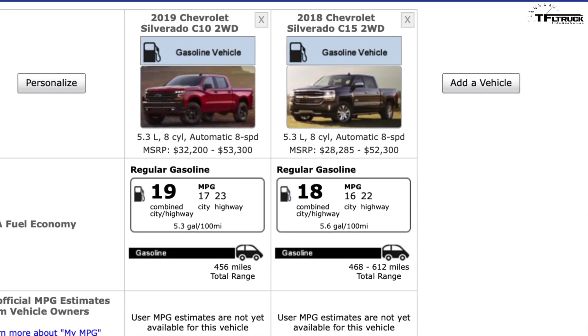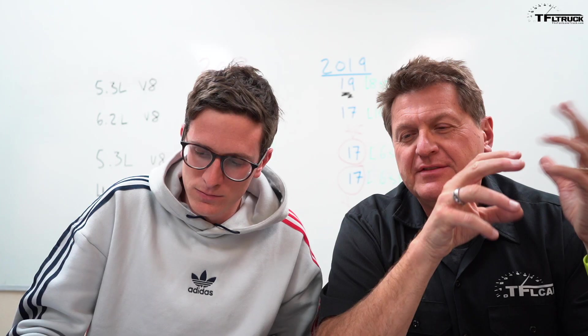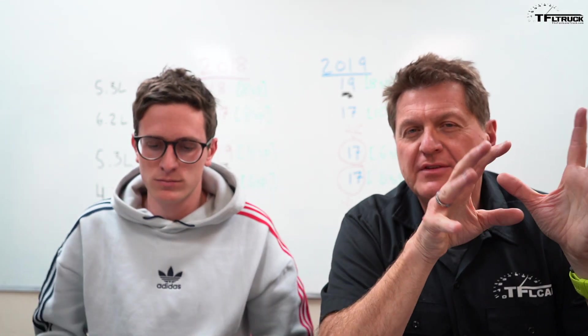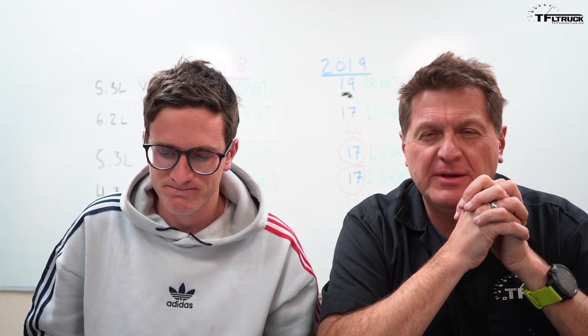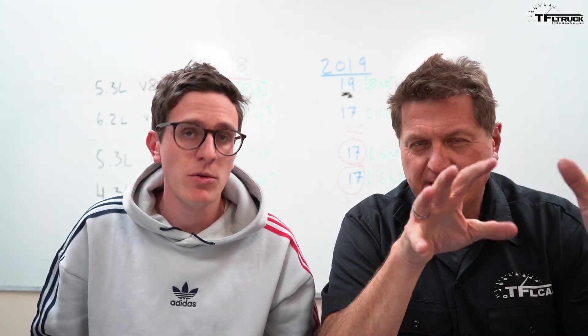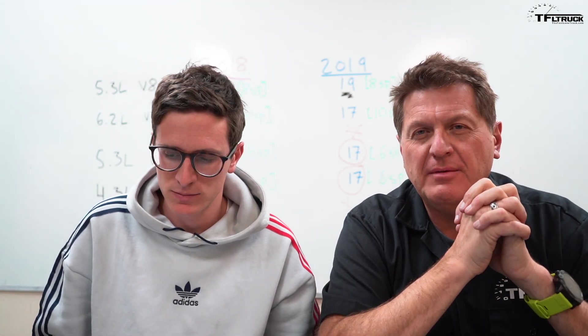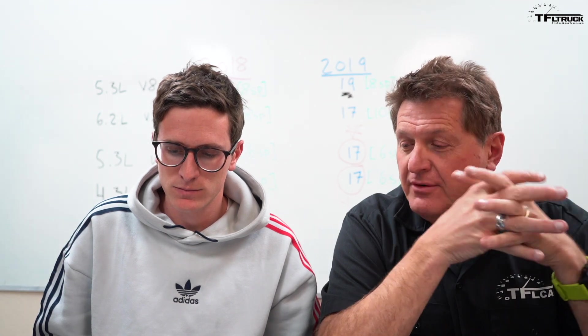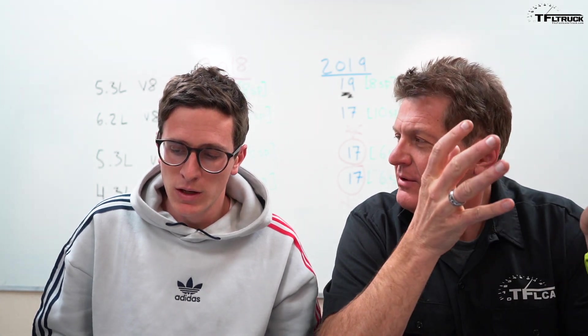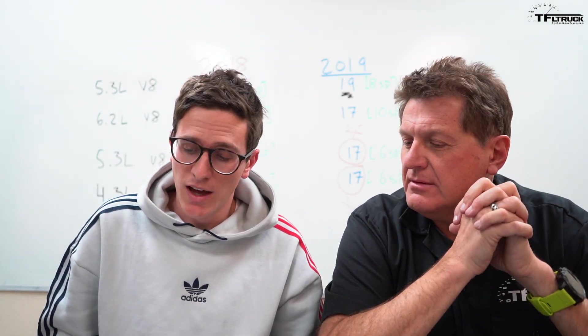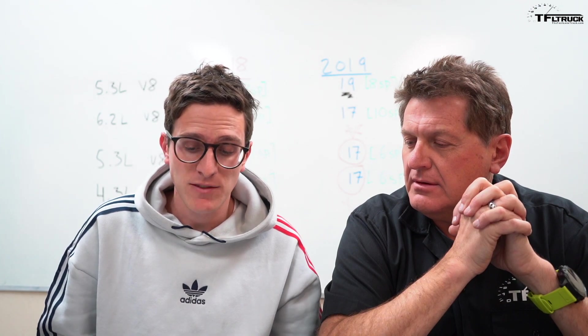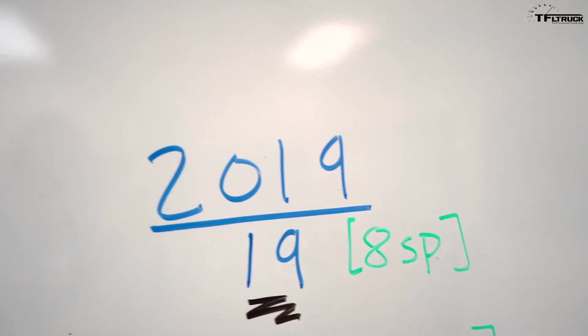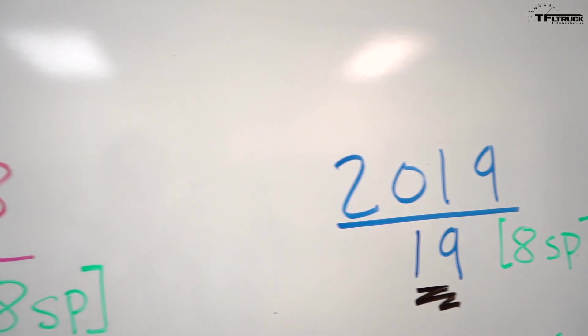All the numbers we're talking about are really combined numbers. There's obviously city, highway, and combined. We're going to keep this simple, we're just going to talk about the combined number because that is the most relevant to the way that people drive. So the 2019 with the 8-speed and the V8 5.3 gets 19, the 2018 with the 8-speed and the V8 5.3 gets 18 combined. That's understandable.